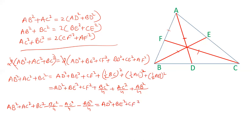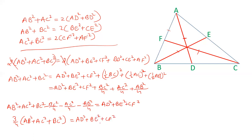AB² minus AB²/4 gives three-fourths of AB². Similarly, three-fourths of AC², and three-fourths of BC². So we get that the sum of squares of the medians equals three-fourths of the sum of squares of the sides. This is the key relationship.